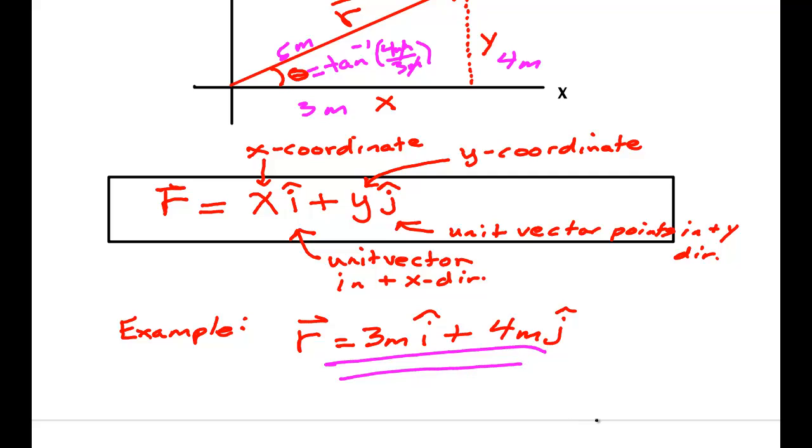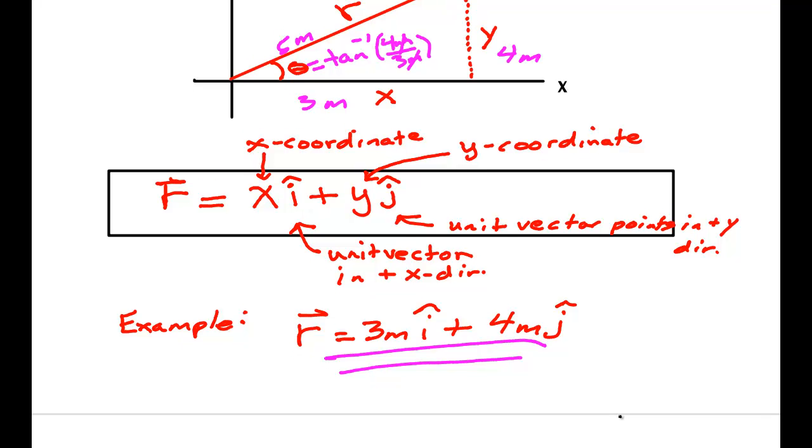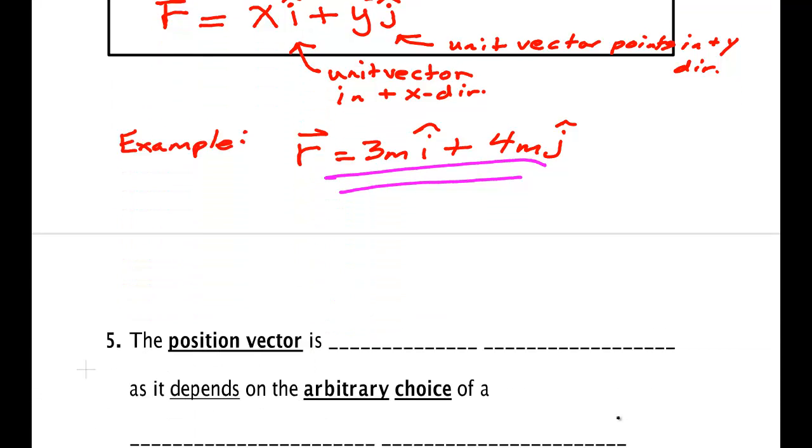There's nothing special about these vectors compared to other vectors. They're just vectors that describe the location of an object. Now, this brings up an interesting question.